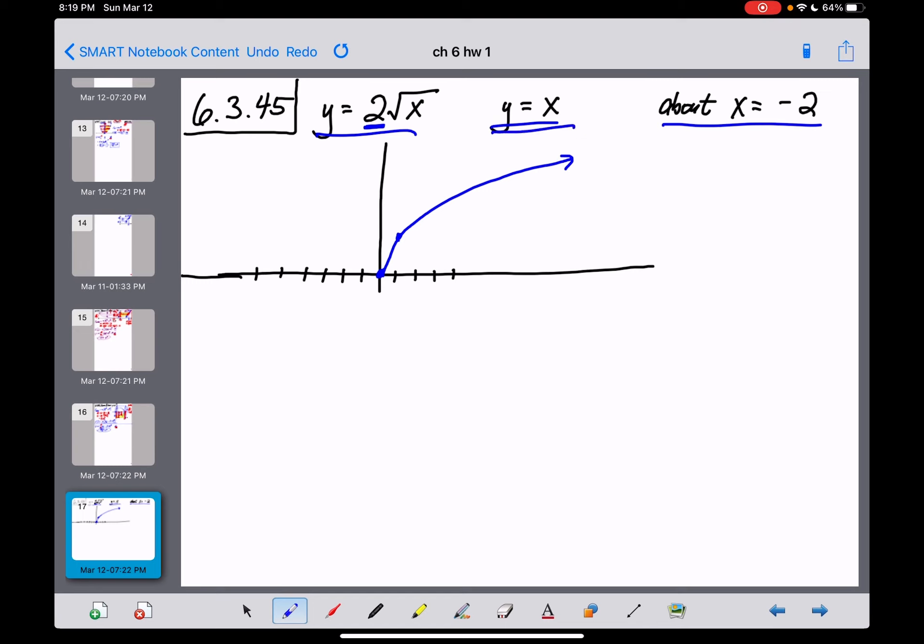y equals x, of course, is just a line going through here, everybody, at a 45 degree angle. So we get the line y equals x there, got it.